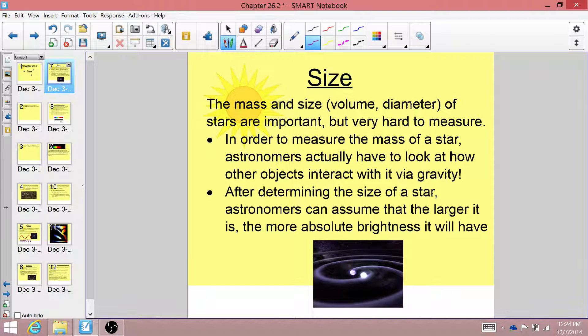Now, size, especially the diameter of a star, is very closely related to apparent brightness. And after determining the size of a star, astronomers can assume that the larger it is, the more absolute brightness it will have. So if you think about two stars that are exactly the same size, but one is much, much, much farther away, the one that's closer is going to have a larger apparent brightness than the one that's farther away.